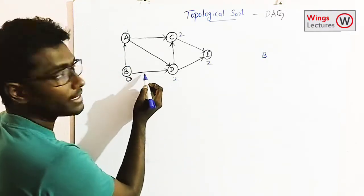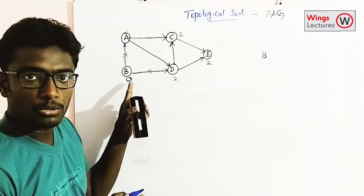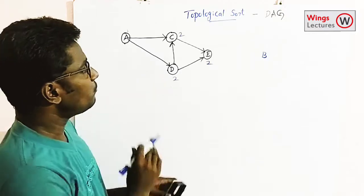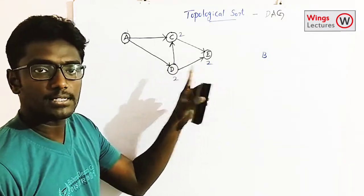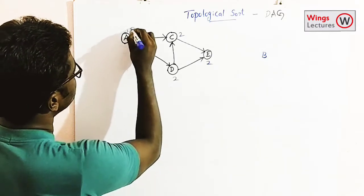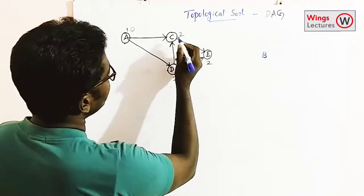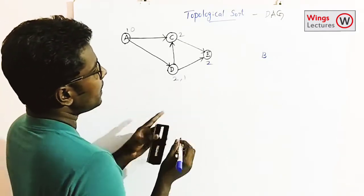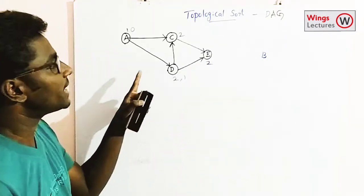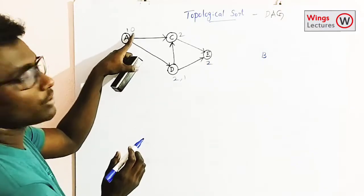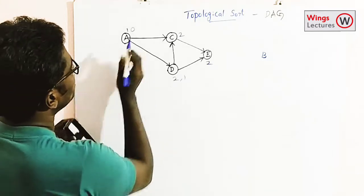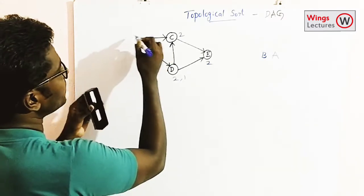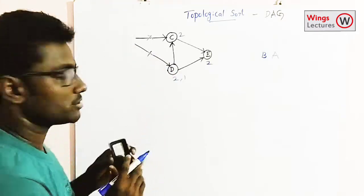The corresponding edges of B go to two vertices, so remove those two edges as well. Now find the in-degree of the remaining vertices. In-degree of A is now 0, in-degree of C remains the same, in-degree of D is now 1, and in-degree of E remains the same. The vertex with in-degree 0 is A, so remove A and print it to the output, then remove its corresponding edges.